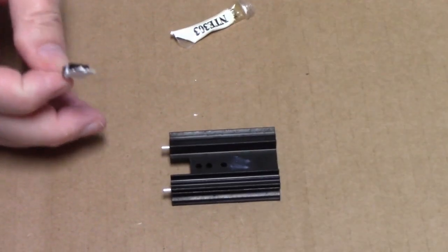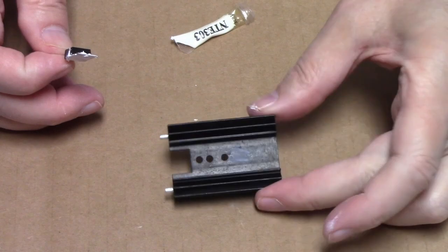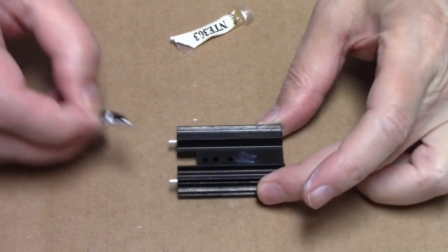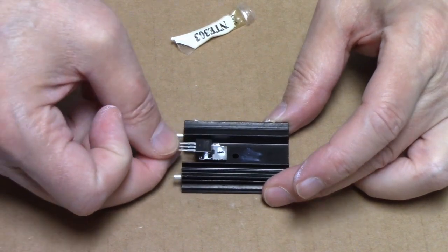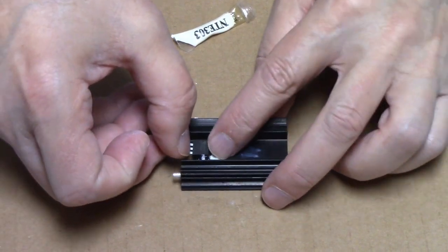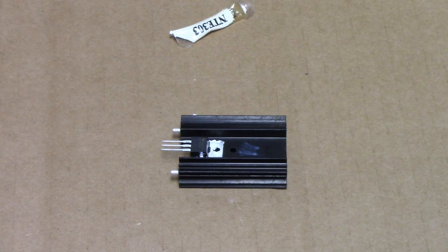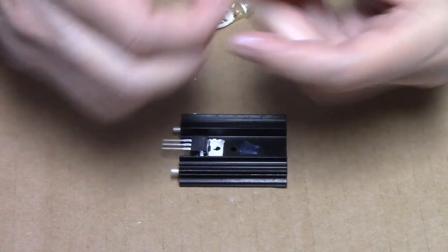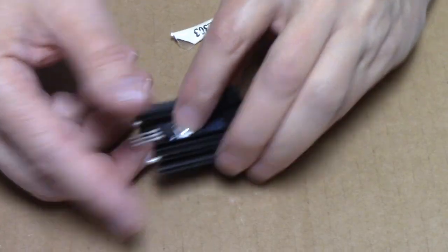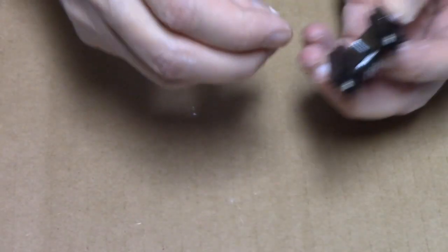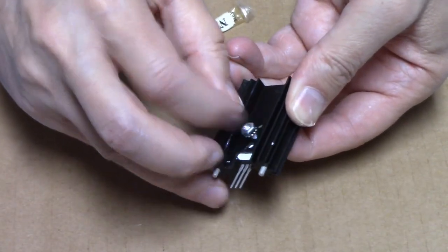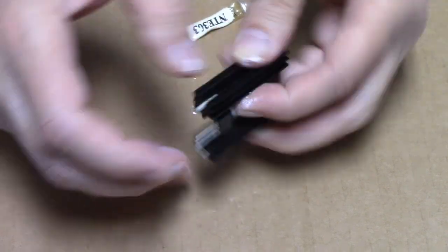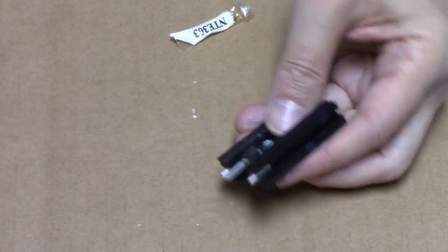And if you'll notice there are three holes in the heat sink. And the hole in the regulator will match up with the center of the three holes. And we'll use number four hardware to hold it in place and we'll finish it off with a screwdriver.